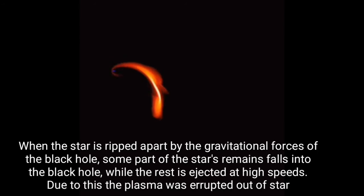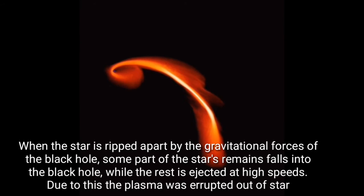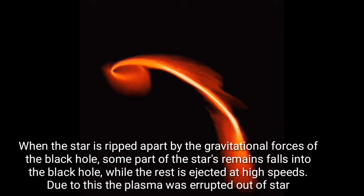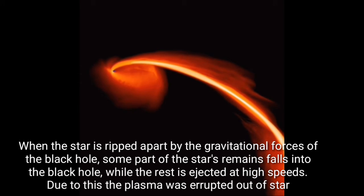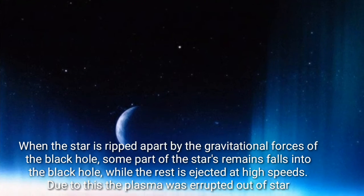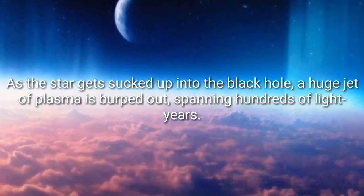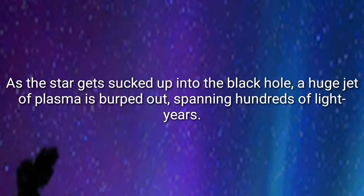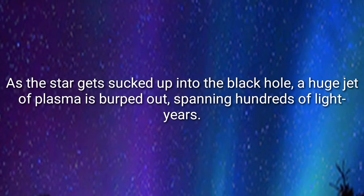When the star is ripped apart by the gravitational forces of the black hole, some part of the star's remains falls into the black hole while the rest is ejected at high speeds. Due to this, the plasma is erupted out of the star. As the star gets sucked up into the black hole, a huge jet of plasma is burped out, spanning hundreds of light-years.